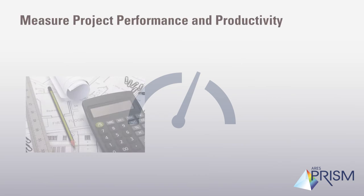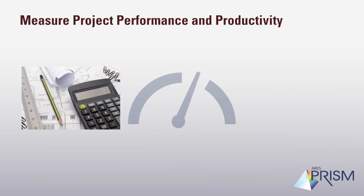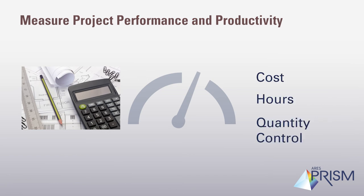Measure Project Performance and Productivity: With Prism Cost, organizations can effectively measure project performance and productivity using cost, hours, and quantity control elements.